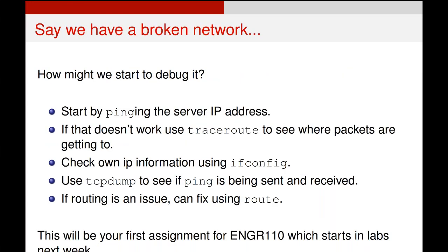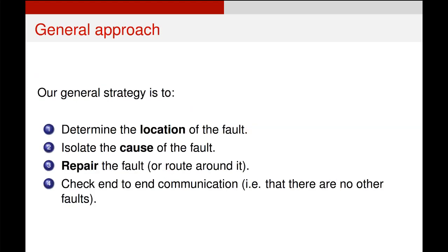If we have a broken connection between two computers on a network, the first step to debug is to start by pinging connections from one computer to another, and pinging all of the interspersed routers along the way. If that does or doesn't work, we can use traceroute to see what path our information is taking and where it falls away, and we can check the flow of traffic through that network using something like tcpdump.